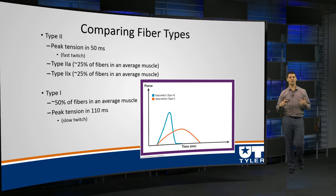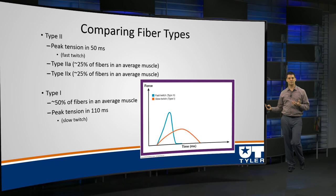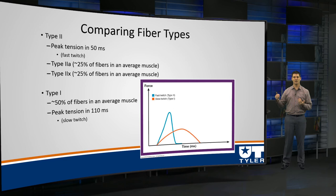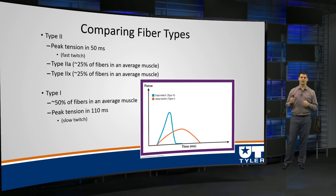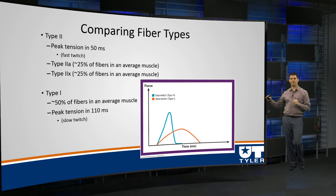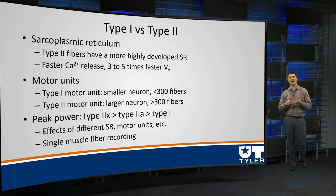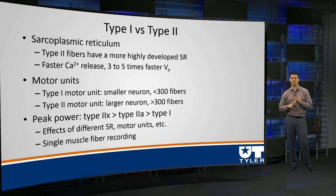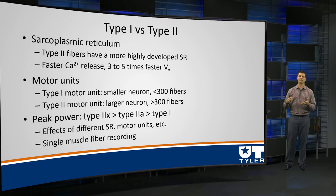To compare again: peak tension — essentially how fast they twitch — is much faster in fast twitch fibers and much slower in slow twitch. Our fast twitch reaches its peak tension much faster than slow twitch, and also generates much more force. Two reasons account for this: ATPase activity, and also a highly developed sarcoplasmic reticulum in fast-twitch fibers, which allows us to release calcium much faster. Therefore, we're able to not only break down ATP faster, but also get calcium out of the sarcoplasmic reticulum much faster as well.